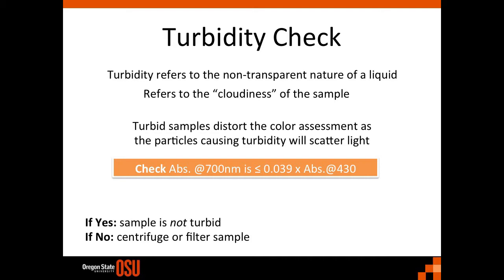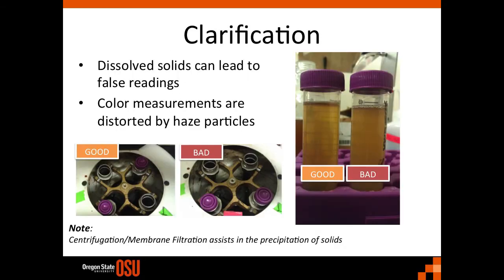There is a convenient way to check for turbidity using a multi-wavelength assessment. If the absorbance at 700 nanometers is less than the absorbance at 430 nanometers multiplied by a factor, then the sample is not turbid. If the value is greater, then the sample is considered turbid and must be filtered using membrane filtration, or it can be centrifuged to precipitate the solids. Make sure the centrifuge is loaded in a balanced fashion. Membrane filtration can be used here to collect haze particles to allow for better color measurements.